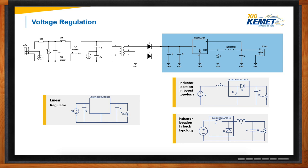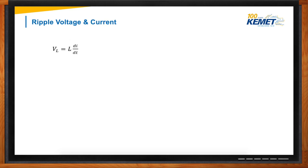Given the nature and architecture of a switching regulator, you will always have a ripple voltage. First, you need to understand the voltage ripple requirements and the limits of your application. The basic relationship of inductance, voltage, and change in current is a starting point for any switching regulator.